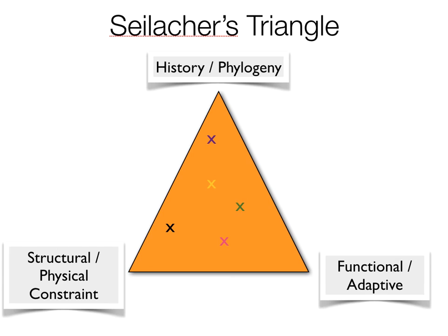In terms of structural and physical constraints, you can think of things like the fact that there are no animals with wheels, because creating ball bearings out of tissue is pretty tricky, or the fact that whales can't fly. Every single trait falls not on one apex or another, but is usually some combination of the three.